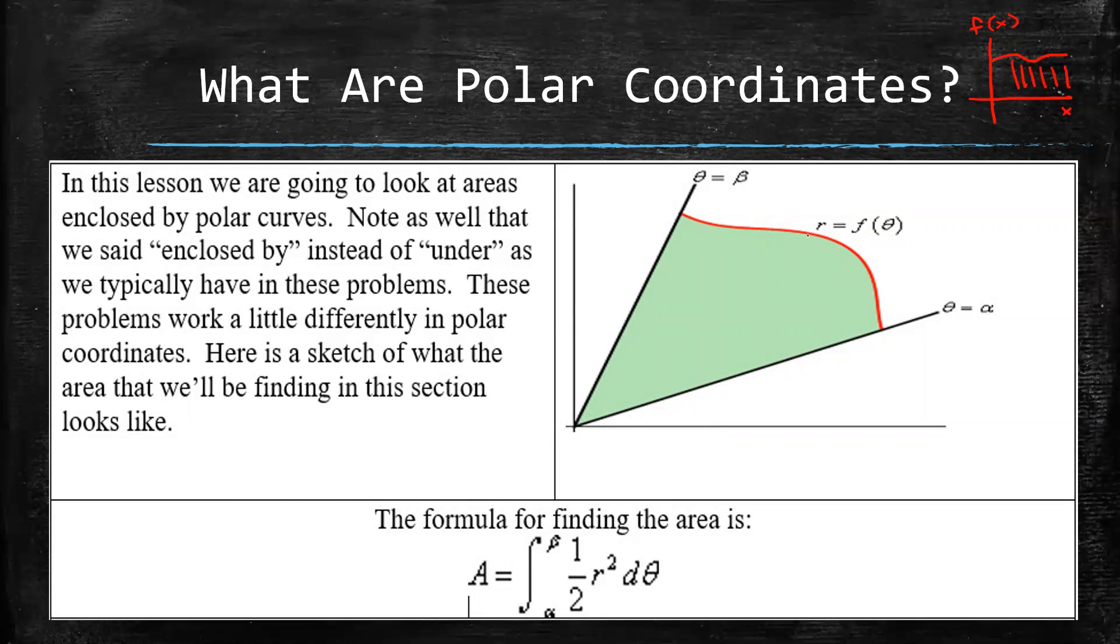But when a function is defined in a polar way, we know that the function r, the radius, is a function of theta. So it's basically a circular function. So the function goes around and around in the circle. And so we talk about enclosed, like in between a certain angle and another certain angle.